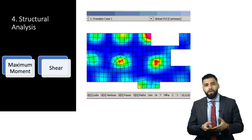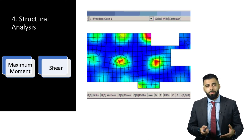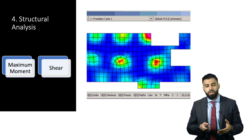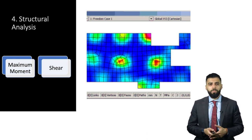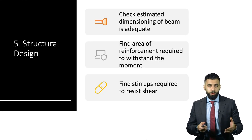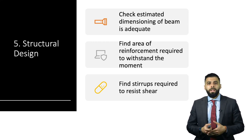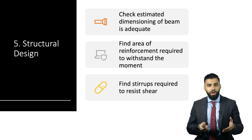Step four is where you use software — which structural designers commonly use — to analyze the structure and give you the maximum moment and shear. On the right-hand side you can see an example of a slab being examined in one of the common software tools used in the industry. Step five is where the structural design takes place: the designer checks the estimated dimensions from the earlier step to see if they are adequate, and determines the area of reinforcement required to sustain the tensile forces on the concrete member.